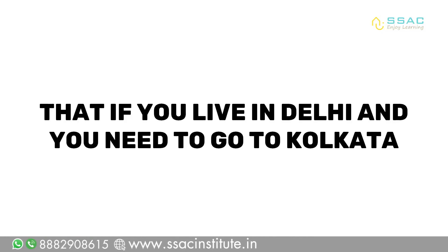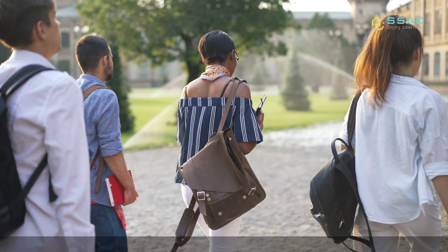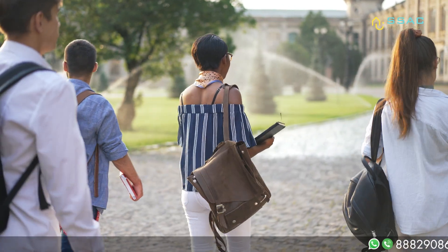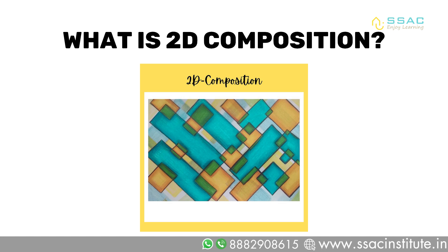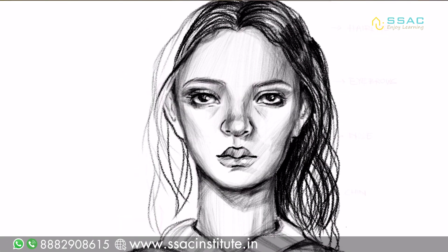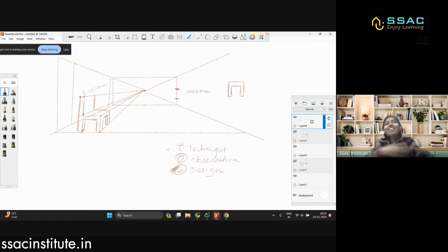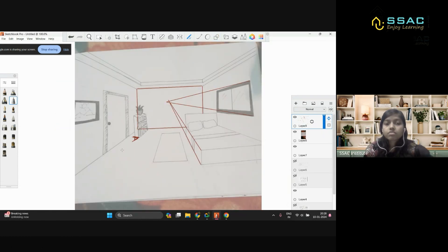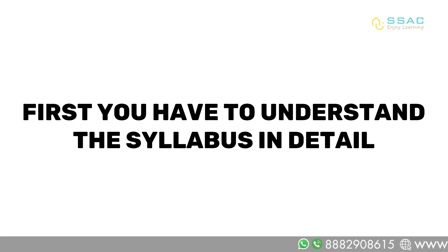You need to understand that if you live in Delhi and need to go to Kolkata, you need to take the train going to Kolkata. If you take the wrong train, you will never reach your destination. Similarly, many students follow the wrong path and think they will crack the examination — that's not possible. You need to learn things the right way. Understand the syllabus properly: what is 2D composition, 3D composition, human figures, portrait sketching, and most importantly, perspective sketching — what it is technically and what aspects are involved.